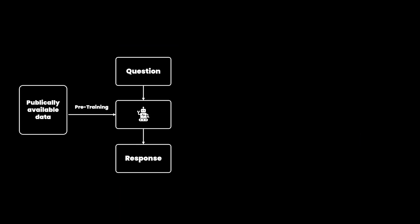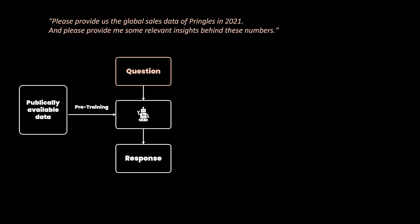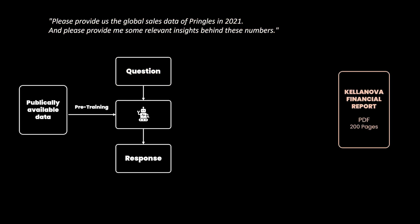Let's go back to our example where we ask the following question to our LLM: 'Please provide us the global sales data of Pringles in 2021, and please provide me some relevant insights behind these numbers.' But now, we also have the full financial report of Kelanova containing 200 pages in PDF. One option would be to read the full report and collect the necessary data points. Another option would be to use RAG to extract the relevant data points from the PDF, add it to our input prompt, and then let the LLM generate the correct answer.